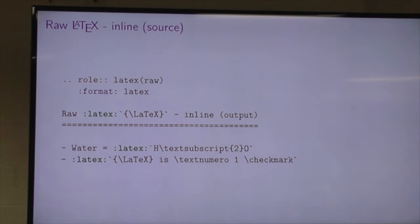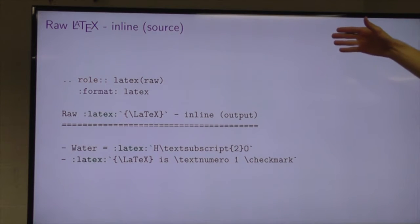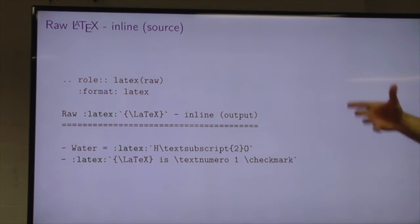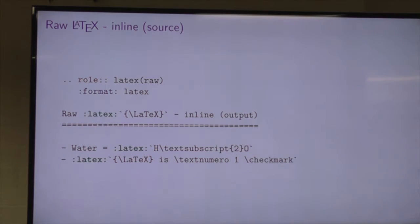We can use the raw directive inline, but we have to do a bit more work because in the inline format between the colons there's nowhere to specify arguments. So we have to define a new role — basically a sub-role of raw — and supply the arguments in the role definition. Using the 'role' directive we define a new role called 'latex' based on 'raw', supplying the format argument as 'latex'. Now reStructuredText will know to interpret anything in the 'latex' role as though it were in a raw role with the LaTeX format argument. This way we can write LaTeX inline — for things like subscripts and all that good stuff.